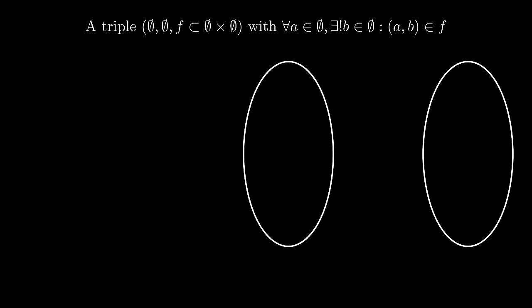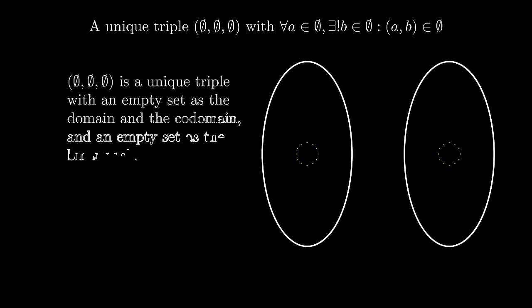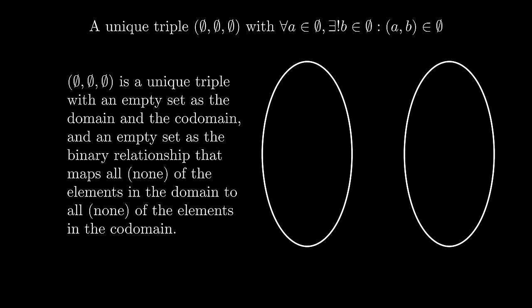Now let's apply our definition to the empty set case. The Cartesian product of two empty sets is still an empty set, and the only subset of empty set is an empty set. So F is an empty set. We have a unique triple, empty set, empty set, empty set, that defines a function.